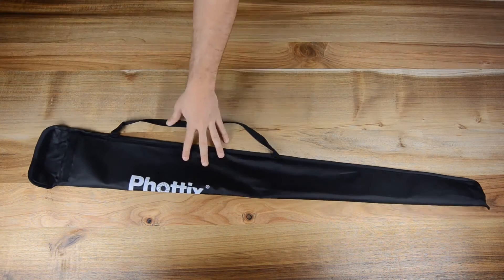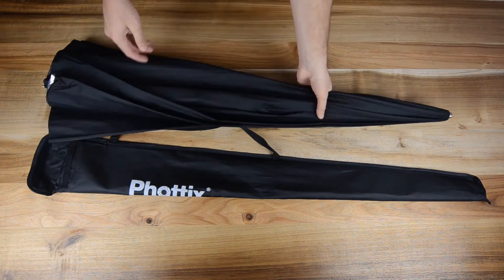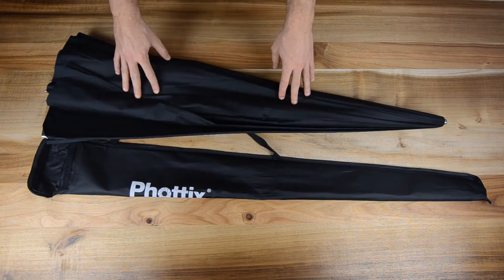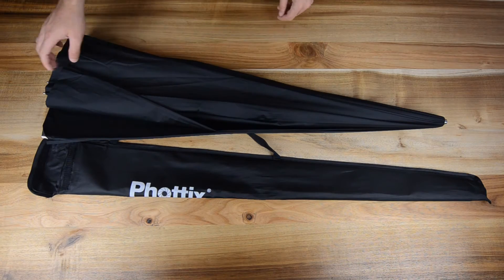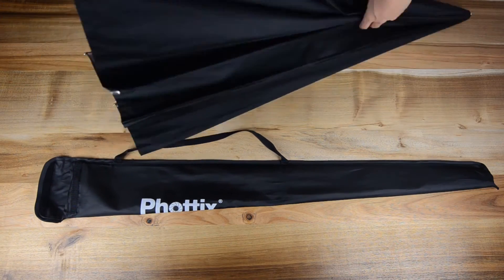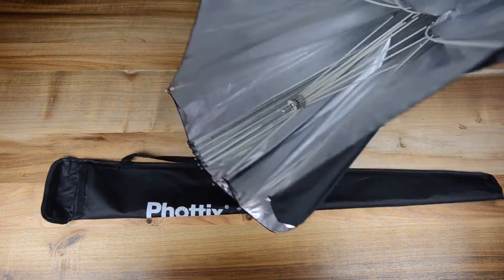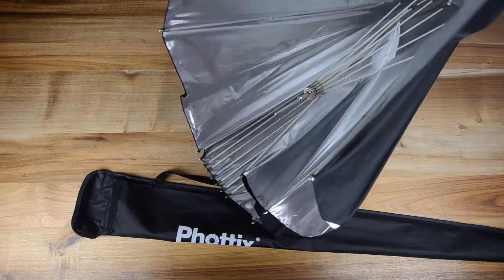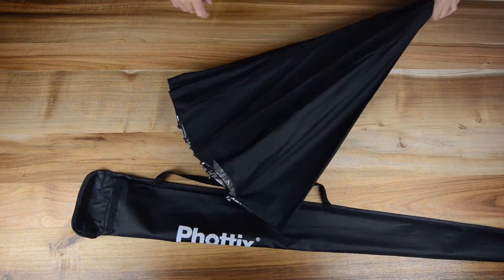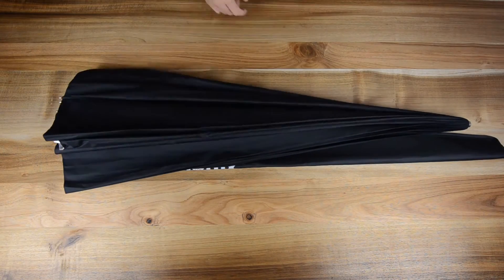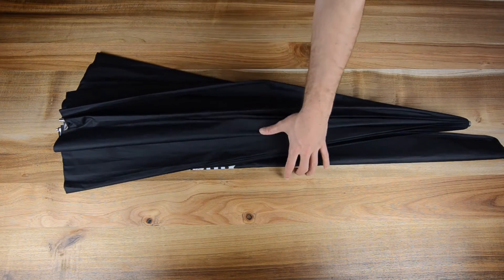Then over here we have umbrella number three, a Photix umbrella. Also comes with pouch. This is a large umbrella, a 72 inch umbrella with silver inlining as you guys can see. I'm just roughly going to open it here for you guys. So this is a super huge umbrella that we use for a super nice fill on most of the shoots.